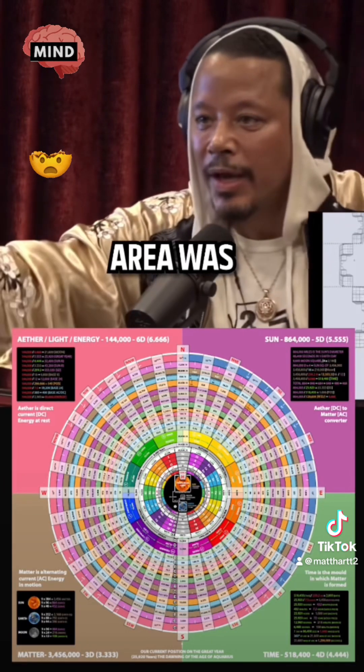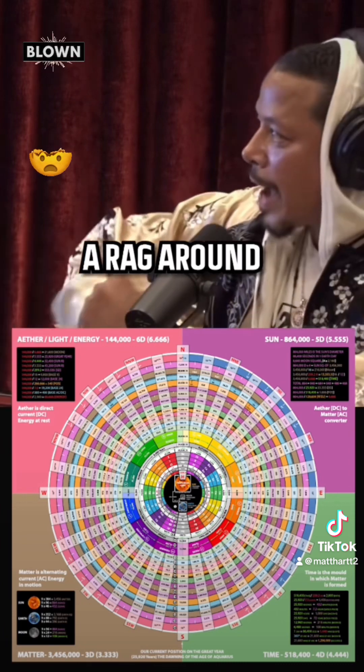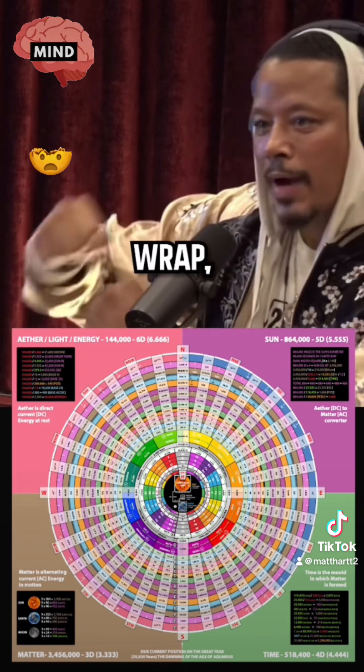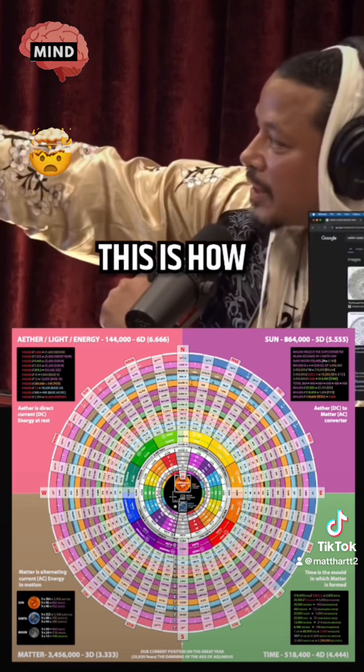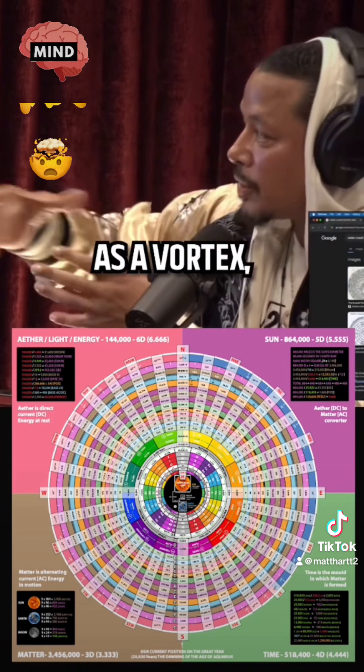Everything was a full circle laid out, and each area was just expanding, like wrapping a rag around your hand. And the first wrap, it's so tight. This is how I saw it more so, but as a vortex.